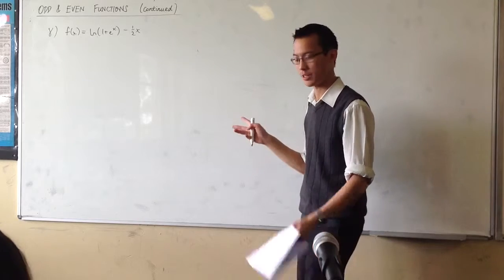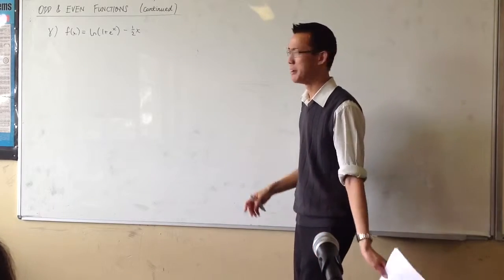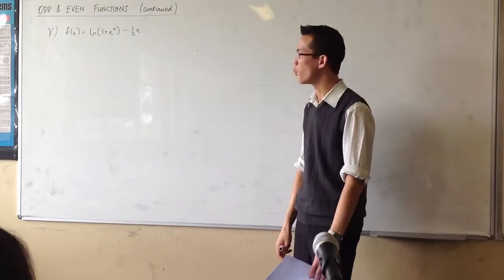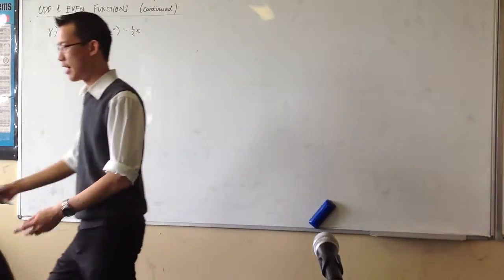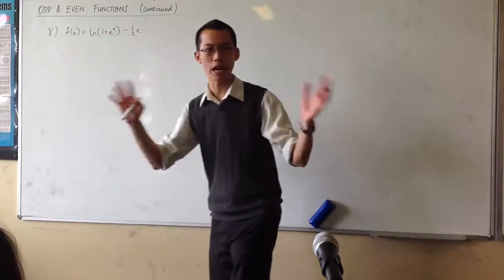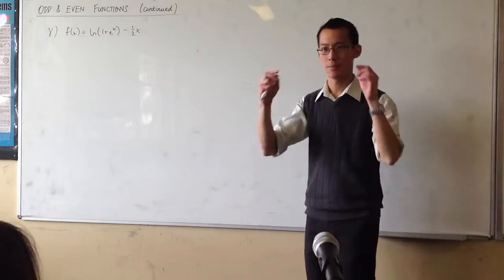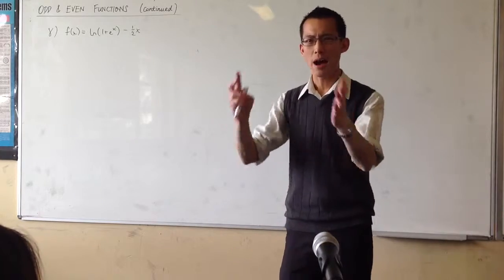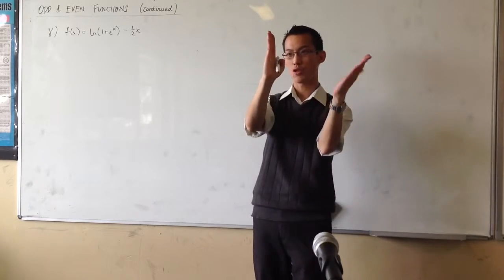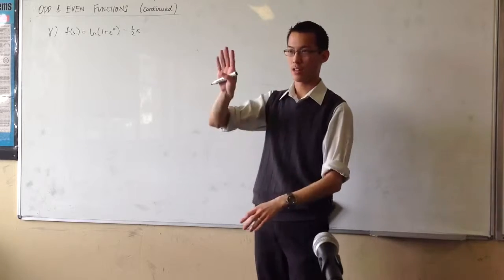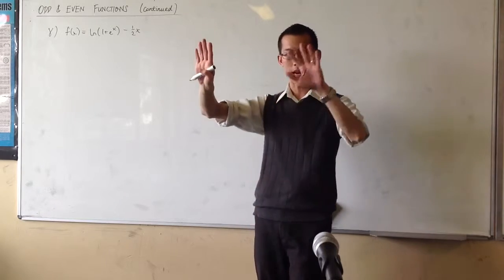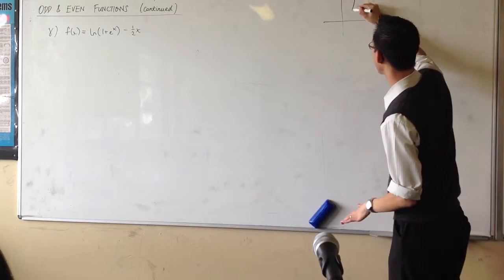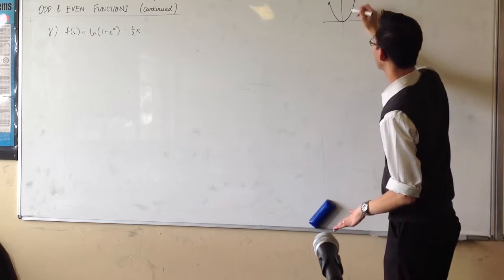When I looked at this question for the first time — because I didn't write this sheet — I thought: what is an even function? An even function is symmetrical. It has symmetry across the y-axis; you can reflect across it. So it looks the same on one side as the other. The classic example is x squared.